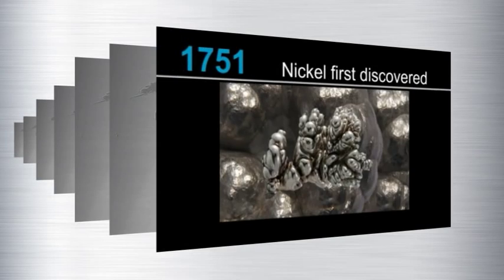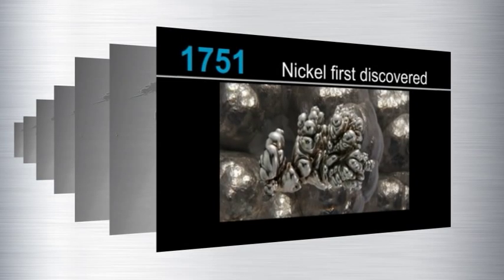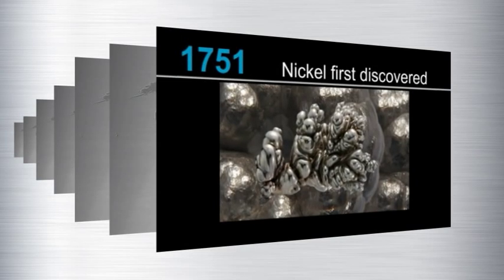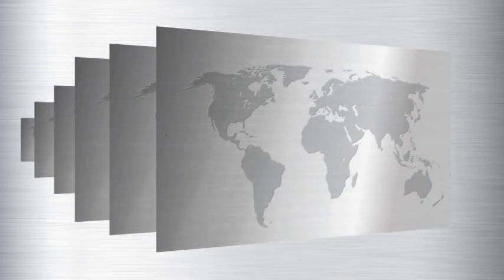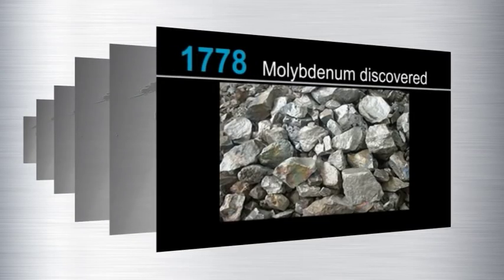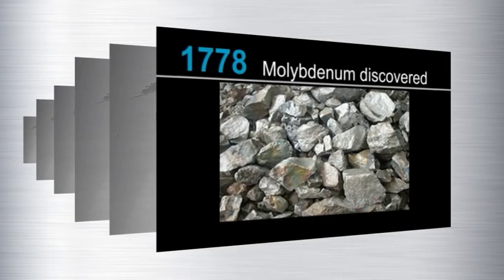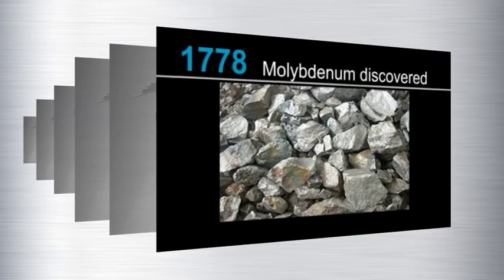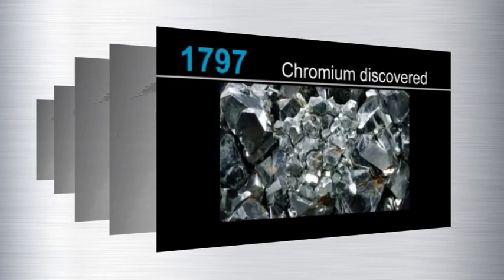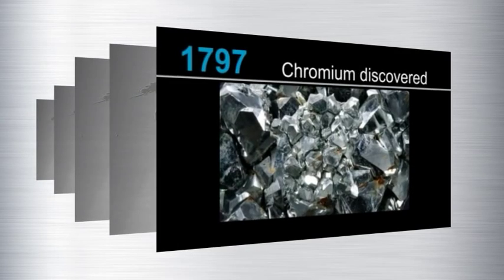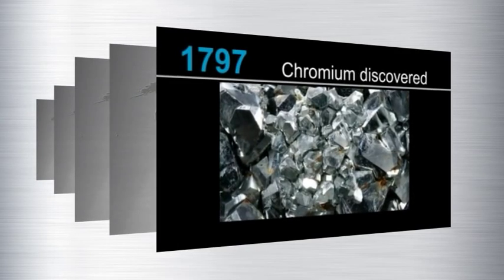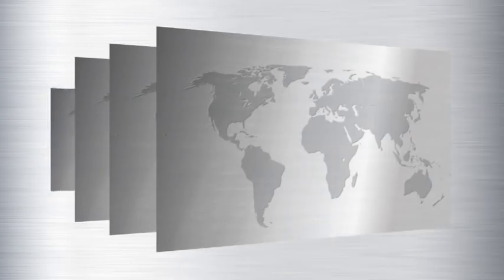Nickel, molybdenum and chromium, which eventually enabled the development of the range of materials we now know as stainless steels, were all discovered in the second half of the 18th century. But it wasn't until the early 20th century that scientists actually began to explore the complex effects of these elements when alloyed with iron.